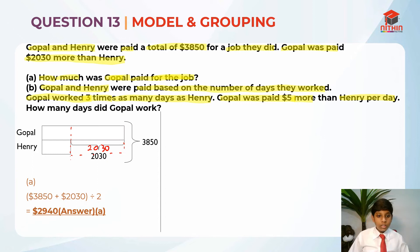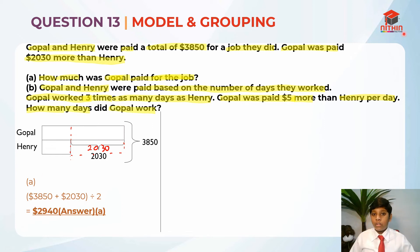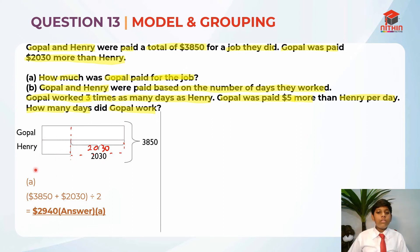Gopal was not paid just $5 — he was paid $5 plus Henry's amount because it's $5 more than Henry. They are asking us how many days did Gopal work. This is where we are going to use the grouping concept. We know from the model that Gopal has $2,940, but we don't know Henry's salary yet, so let's find it.